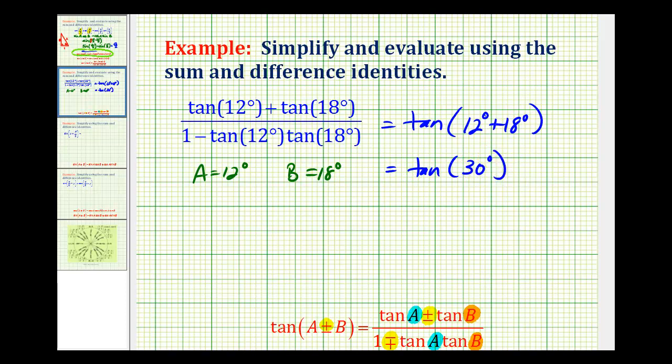The tangent of 30 degrees equals the ratio of the opposite side to the adjacent side. So we have 1 to √3, and we'll rationalize this, which simplifies to √3/3.